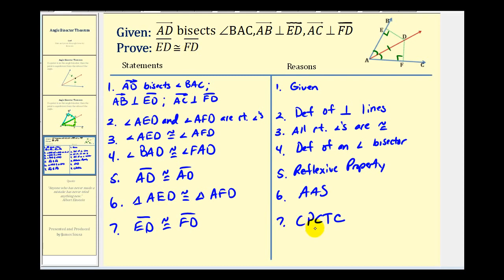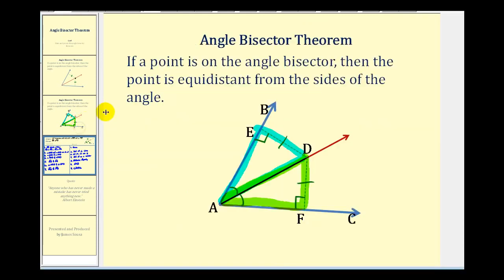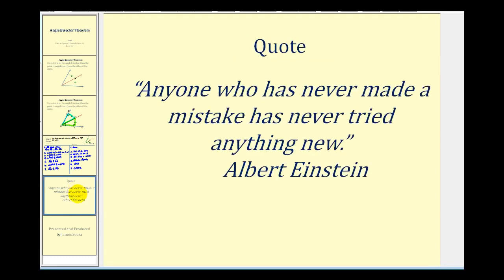And this is exactly what we were trying to prove. If these two segments are congruent, they are the same length, which is what the Angle Bisector Theorem tells us. Any point on the angle bisector would be equidistant from the two sides, because from any point on the angle bisector we would have two congruent triangles. I hope you found this helpful.